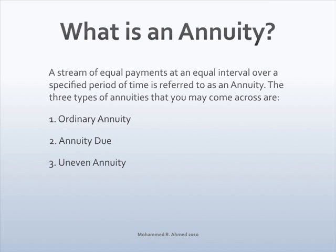Number one, ordinary annuity. Number two, annuity due. Number three, uneven annuity.